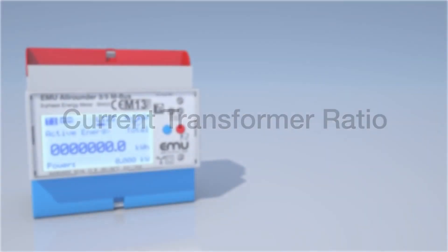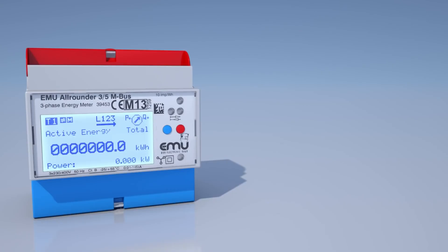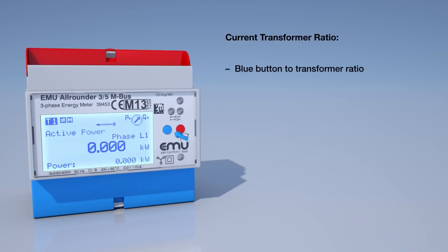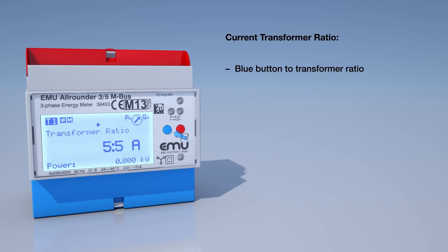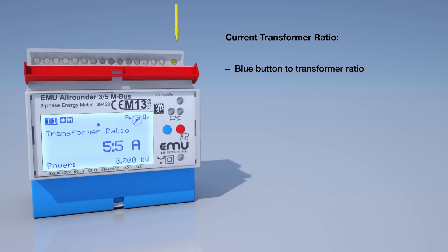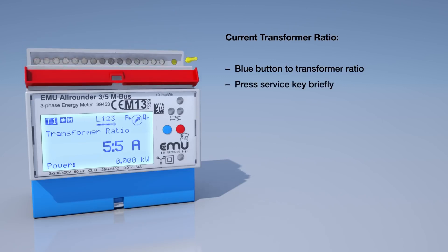Current transformer ratio. To configure the current transformer ratio, press the blue button several times until you see the transformer ratio menu. The configuration mode is accessed by briefly pressing the service button.